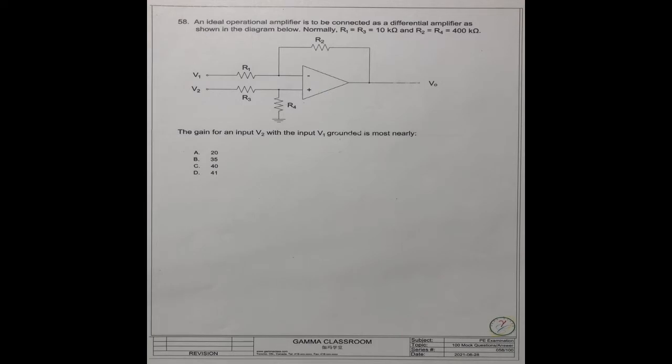The gain for an input V2 with the input V1 grounded is most nearly what number? There are A, B, C, D, four answers.